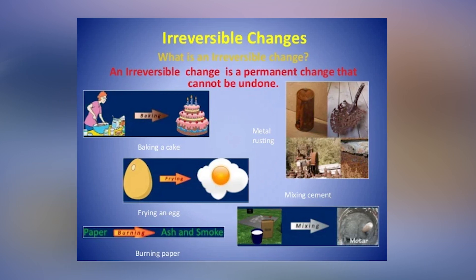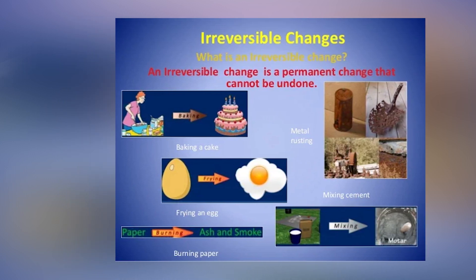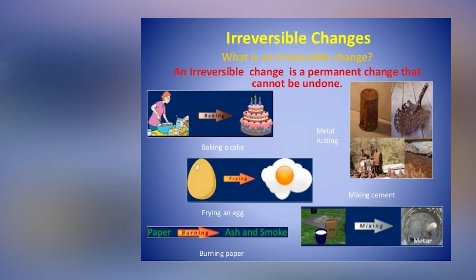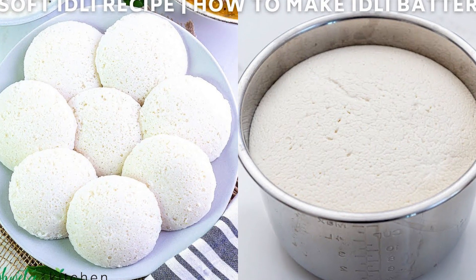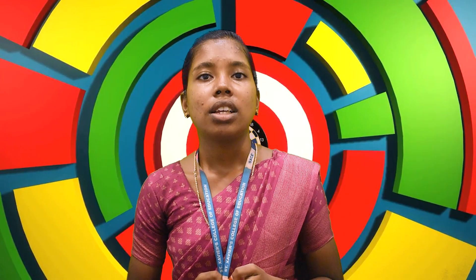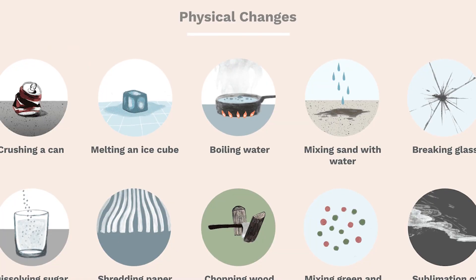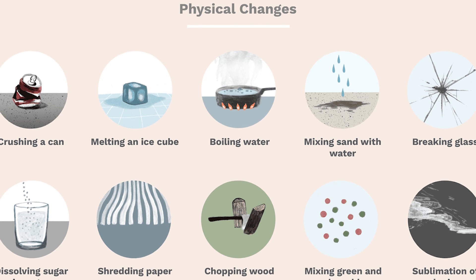For example, change of milk into curd and making idli from batter. Next, physical changes — physical changes are the temporary changes in which there is a change in the physical state or physical appearance of the substance but not in its chemical composition.